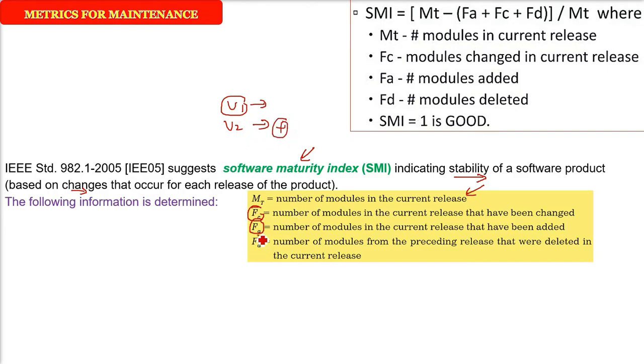FD is the number of modules from the preceding release that were deleted in the current release. So that is the number of modules being deleted.